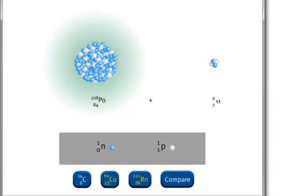Since an alpha particle contains two protons, the atomic number decreases by two from 86 to 84. An alpha particle has a mass number of four, so the mass number decreases from 222 to 218.